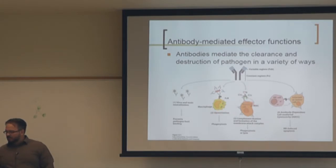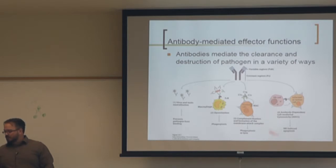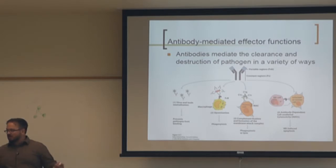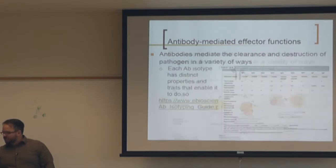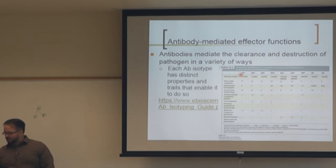When antibodies are bound to a cell, conformation changes allow them to bind the complement system and create the MAC complex, inducing cell lysis. NK cells also have FC receptors like macrophages, but instead of phagocytosing the target — which is the same size as the NK cell — they induce cytotoxicity, sending an apoptotic signal to the cell.